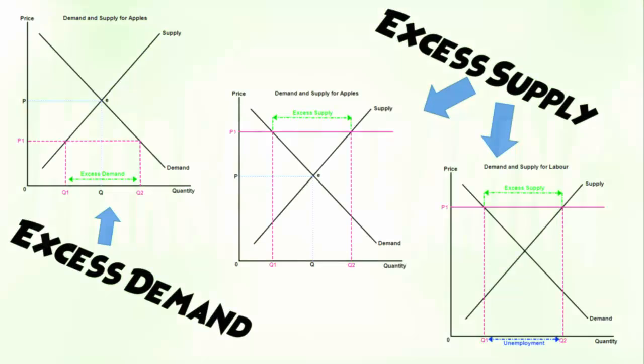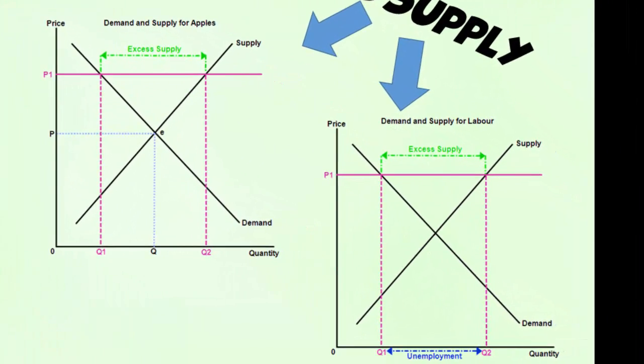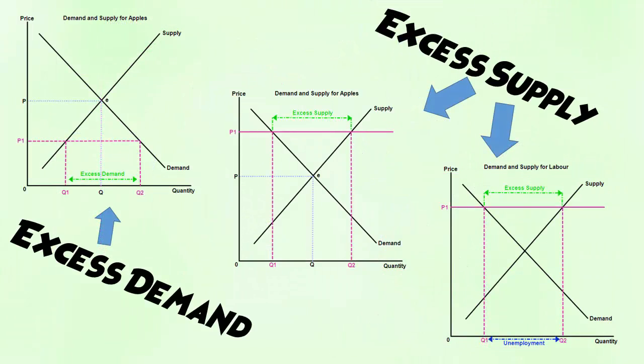Hi everyone, welcome back to Economics A Level here on YouTube. This video is going to look at market clearing and how market clearing happens. Previously we looked at states of excess demand and excess supply. Excess demand is where there is more demand at a given price than there is supply, and excess supply is where supply is greater than demand at a given price. Both these positions are where the free market does not clear and where we have a state of disequilibrium.